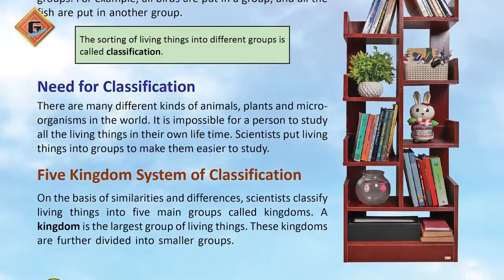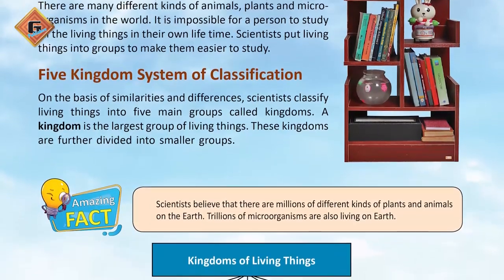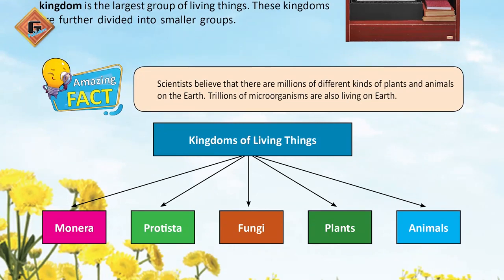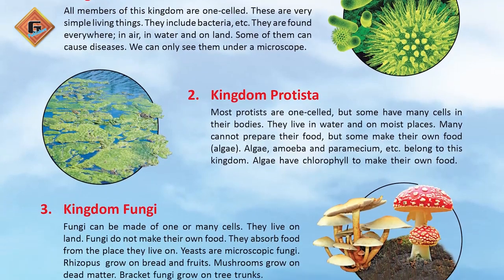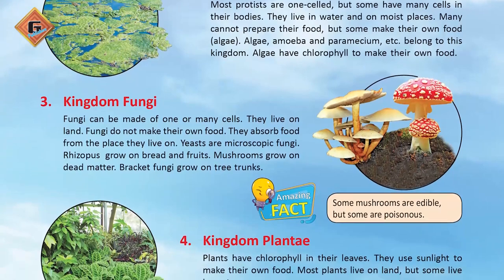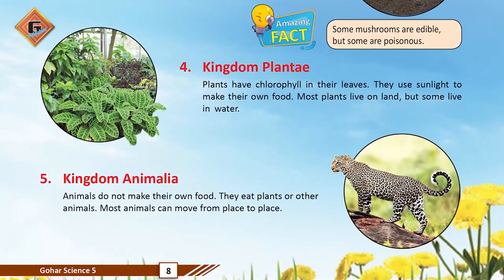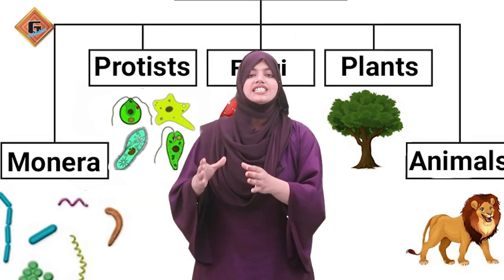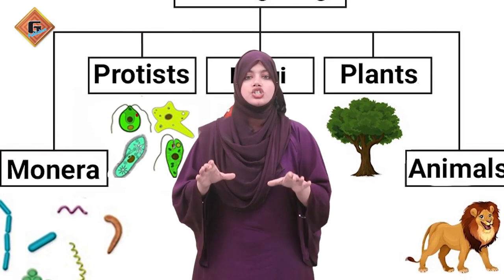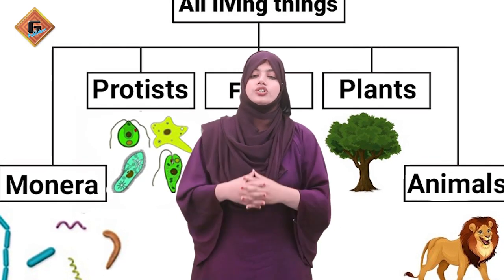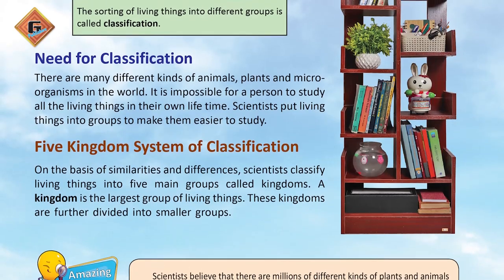Is zaroorat ko lekar humne classification ke system ko introduce karwaya jisko hum taxonomy classification system kehte hain. Is tarah se aap students ke saamne ek web banayein jisme aap students ko five kingdom classification system se introduce karwayein. Aap ek web draw karein — whatever you have, you can use flashcards, you can use the board, you can even use the book — where they can see the web showing the five kingdom classification system.